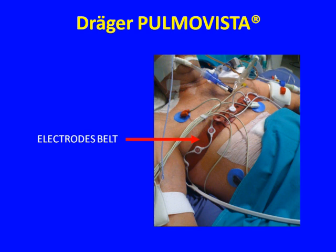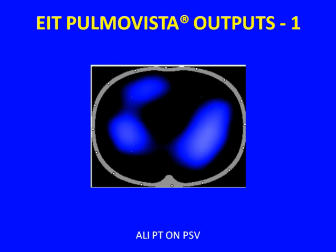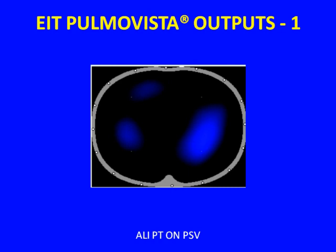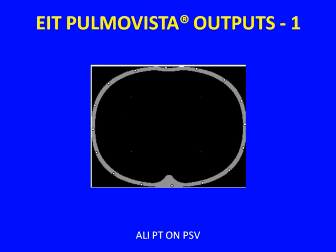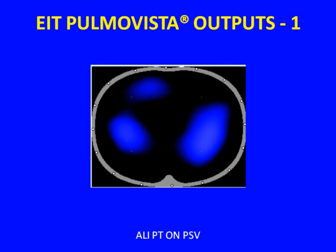This is one of our patients. We place the belt with 16 electrodes around the thorax. You see this is normal ventilation on pressure support. This is end of expiration, while this is more or less end of inspiration. At the end of expiration, there is no air movement, so no recording of changes in impedance — this is why it is all black.